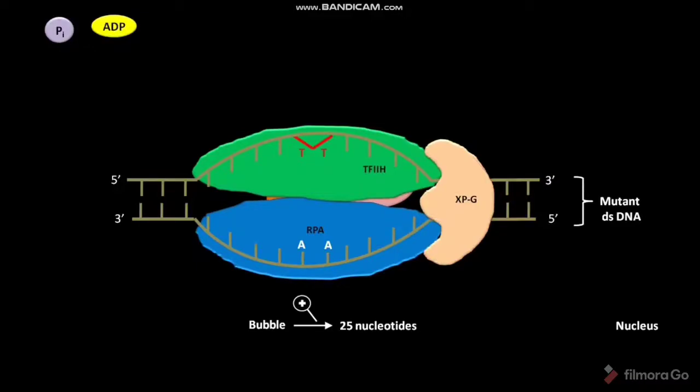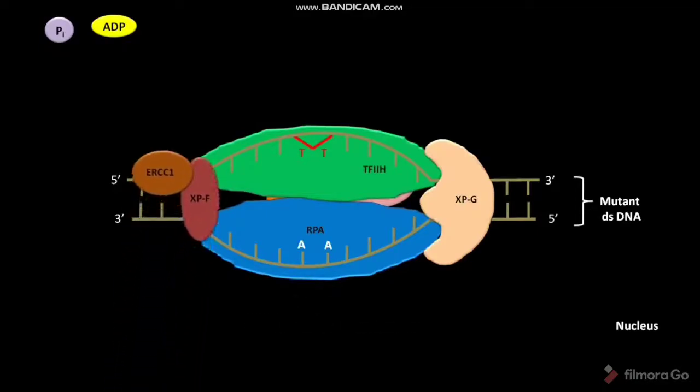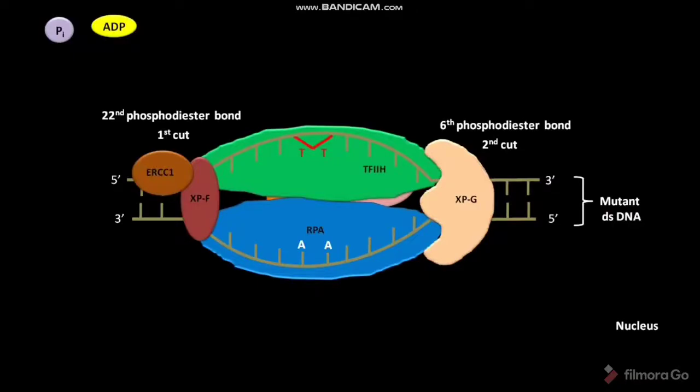A protein complex containing XPF and ERCC-1 then binds to the protein complex. XPF makes the first cut while XPG makes the second cut in the DNA strand containing thymine-thymine dimer. The enzyme system hydrolyzes the phosphodiester bonds on the 5' side of the defective strand. Due to this dual incision, an oligonucleotide containing 27 to 29 nucleotides is formed. 16 polypeptides are used for this dual incision in eukaryotes.